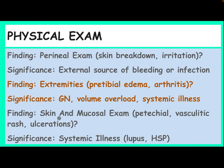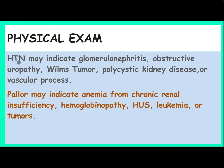Skin and mucosal examination: petechial, vasculitic rash, or ulceration is significant for systemic illness like lupus or Henoch-Schönlein purpura. Hypertension may indicate glomerulonephritis, obstructive uropathy, Wilms tumor, polycystic kidney disease, or vascular process. Pallor may indicate anemia from chronic renal insufficiency, hemoglobinopathy, hemolytic uremic syndrome, leukemia, or other tumor.